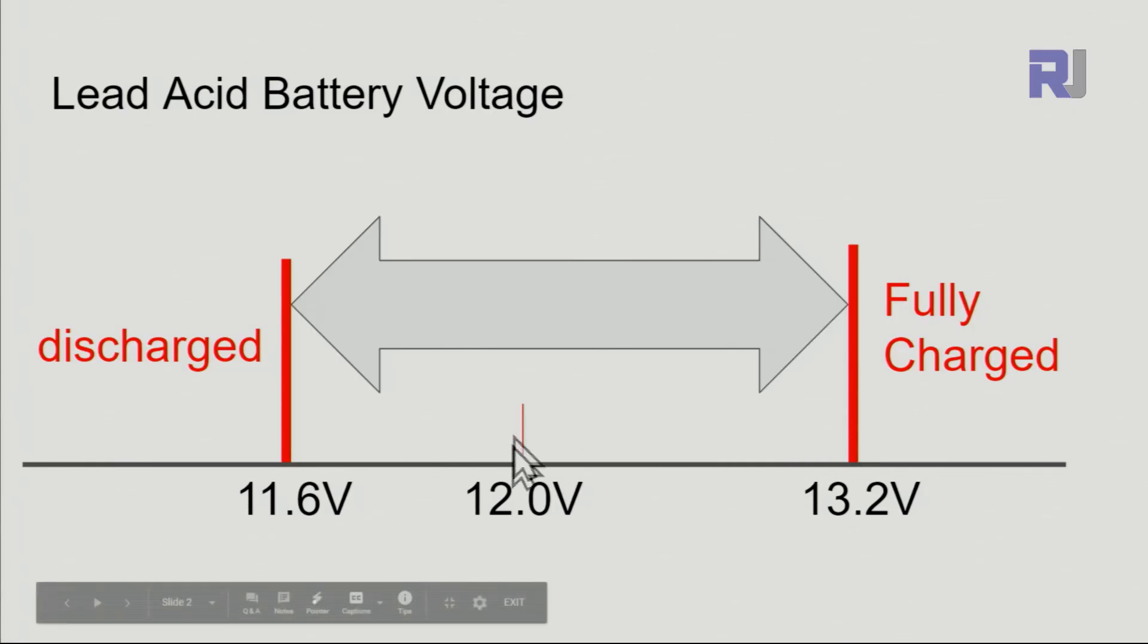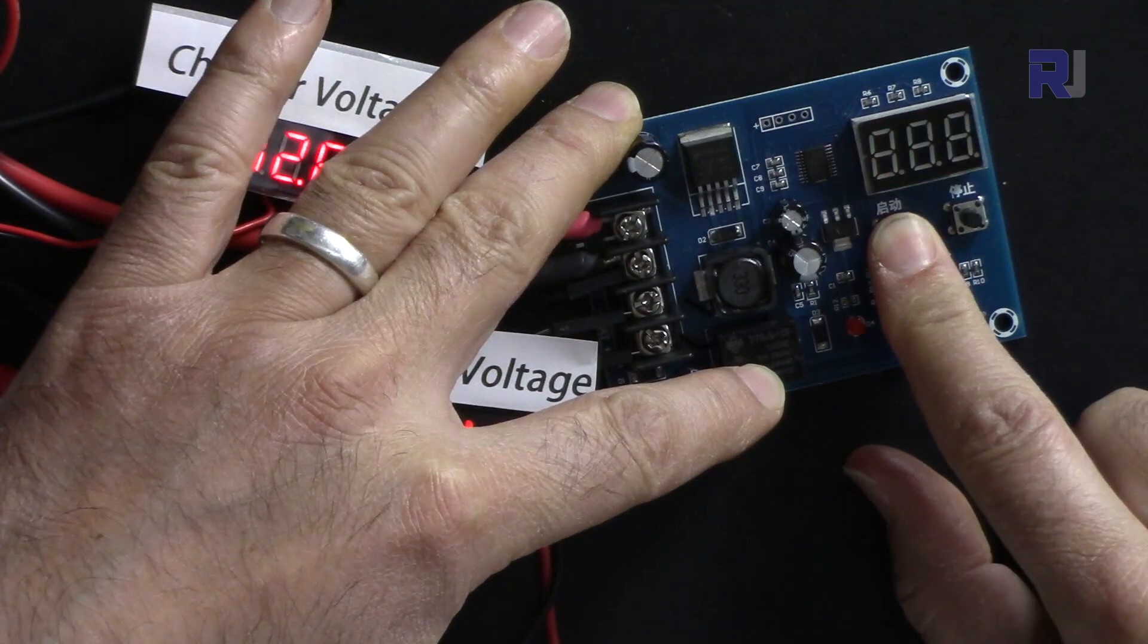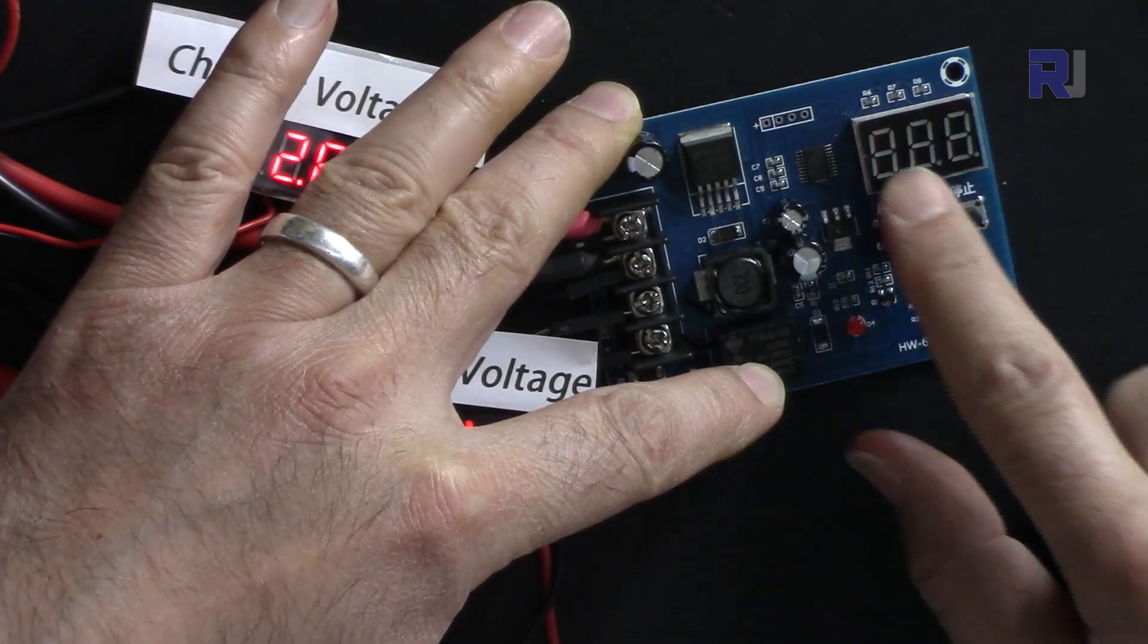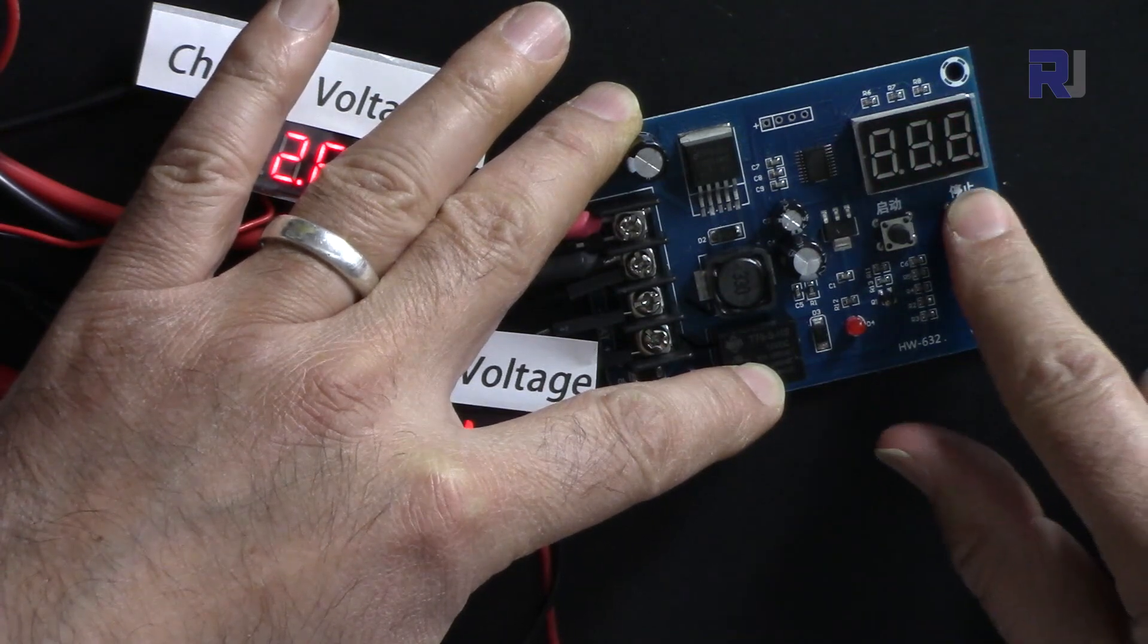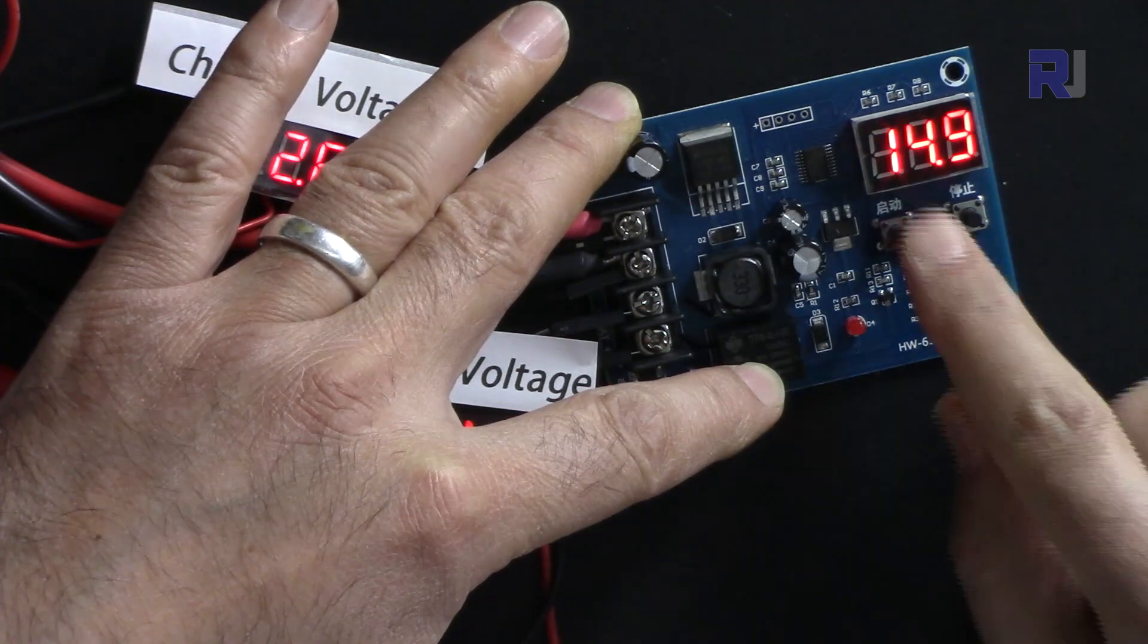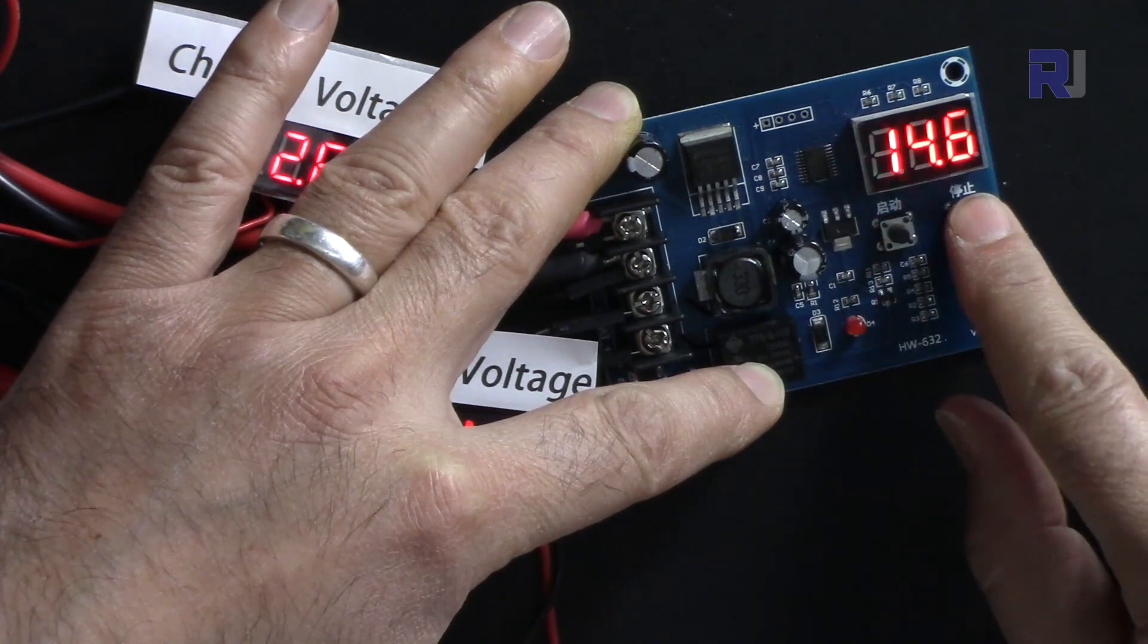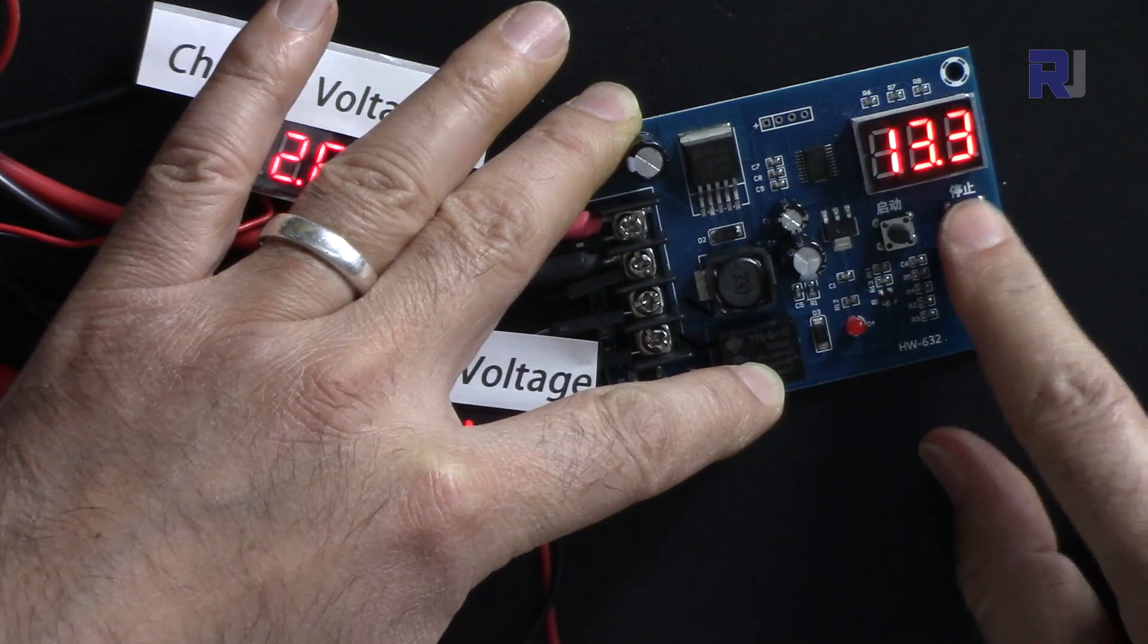Now let me demonstrate with a 12 volt lead acid battery. For this battery, the discharge voltage is 11.6 volts and fully charged is 13.2 volts. We'll set 11.6 for start and 13.2 for stop. I'm pressing and holding this for the start until it blinks, then increase or decrease. I want 11.6, so I wait until blinking stops. Now for the stop, press and hold this, it blinks, and we go to 13.2 and wait.